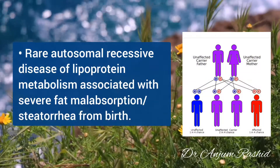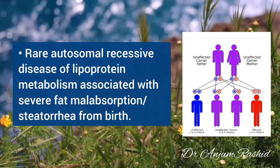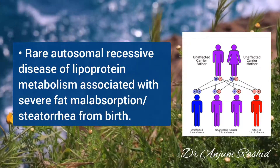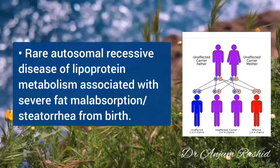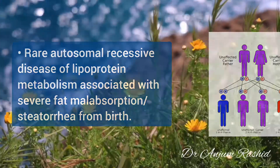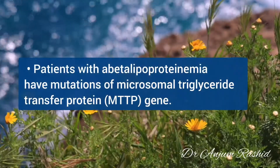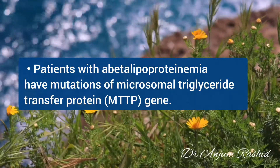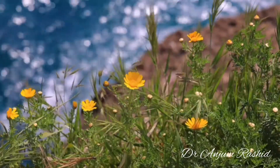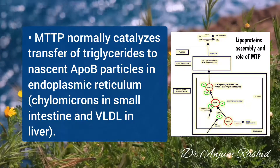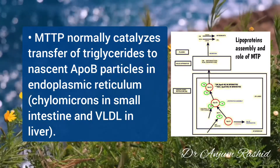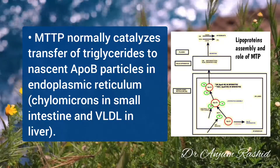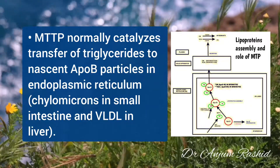Abetalipoproteinemia is a rare autosomal recessive disease of lipoprotein metabolism and is associated with severe fat malabsorption from birth. In these patients there is a mutation of the Microsomal Triglyceride Transfer Protein gene. MTTP normally catalyzes the transfer of triglyceride to the nascent ApoB particles in the endoplasmic reticulum, in the small intestine and in the liver.